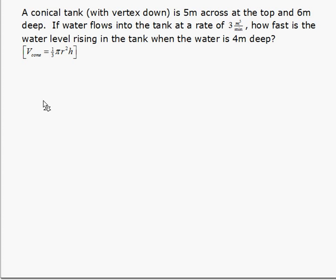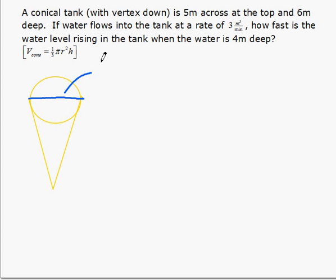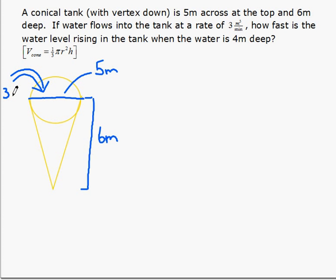Let's start by sketching a cone 5 meters across and inverted. There's our cone, and we'll fill it in with the information we know. It's 5 meters across at the top — that's the diameter — and 6 meters deep. Water flows into the tank at a rate of 3 cubic meters per minute.